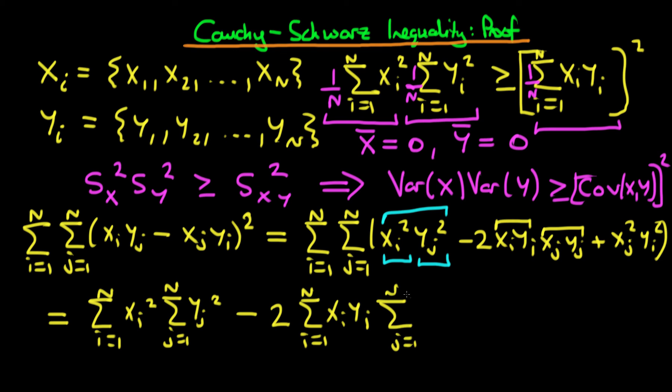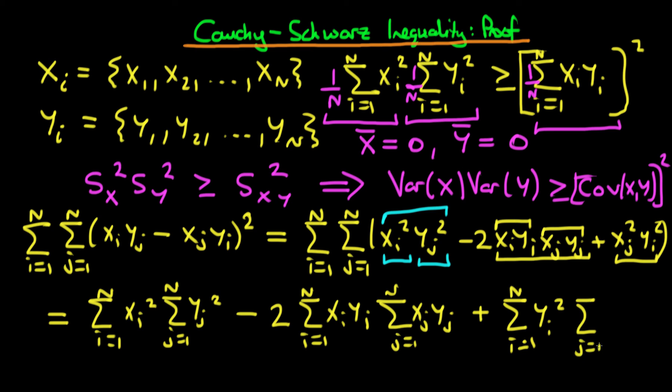That's the second expression. For the last expression, it's pretty similar to the first one — just reversed in terms of the summation. So this is the sum from i equals 1 to n of yi squared, times the sum from j equals 1 to n of xj squared.